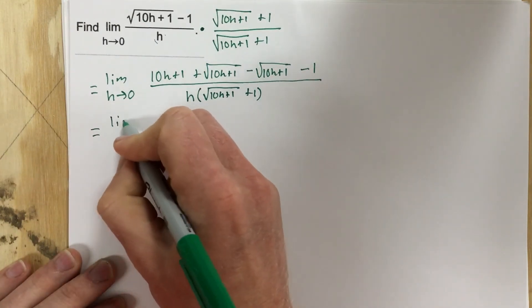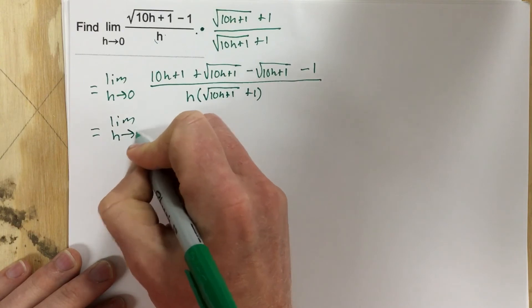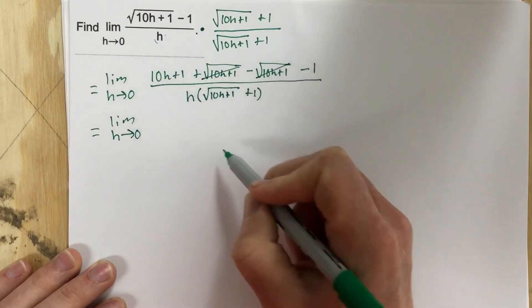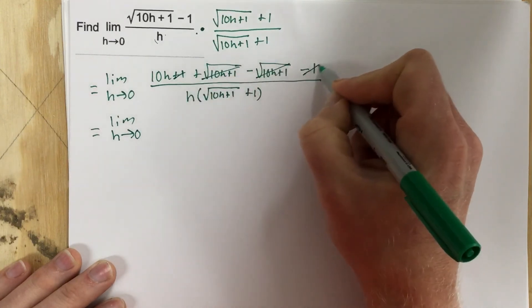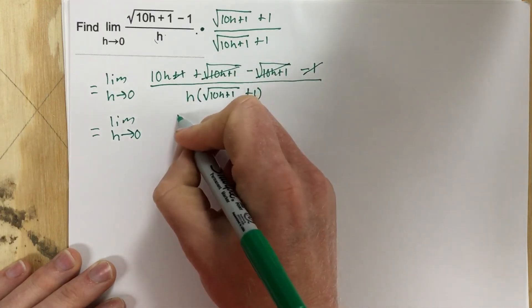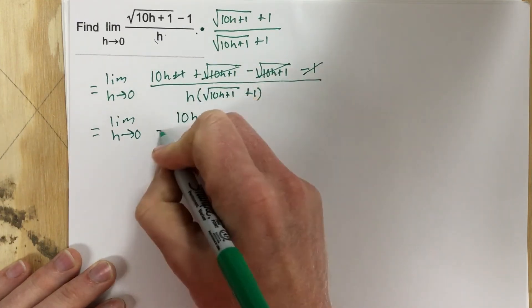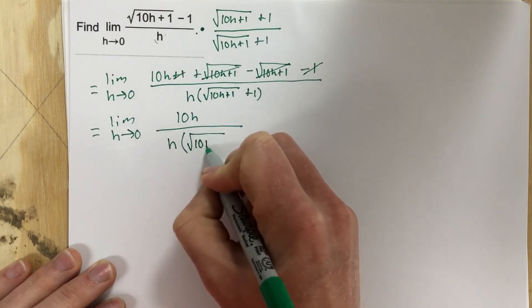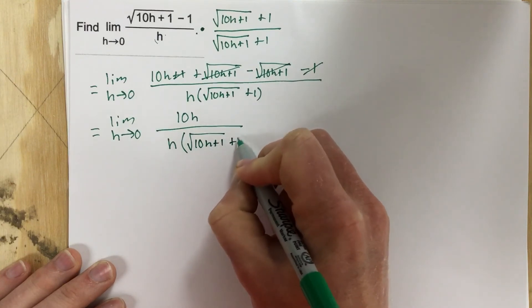This equals limit as h approaches 0. I can cancel here. Cancel the 1 and the negative 1. And I'm left with 10h over h root 10h plus 1 plus 1.